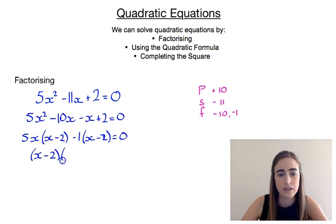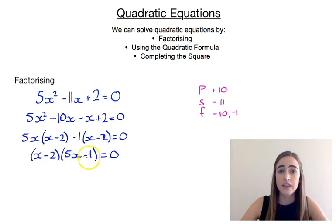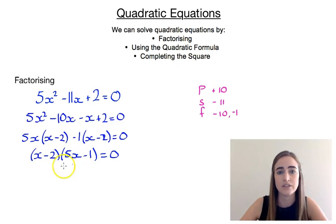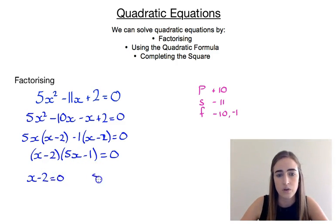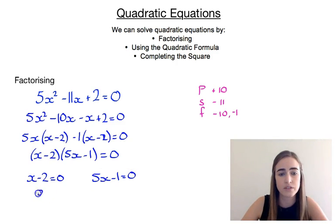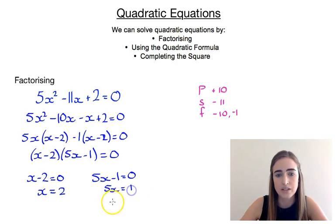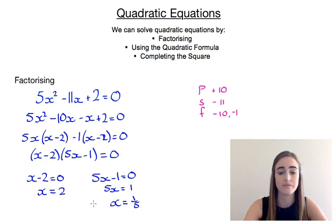And then we've got that common factor of x minus 2 that we can pull out, so x minus 2 times 5x minus 1 is equal to 0. Now that we've factorised, we've got two things multiplied together to give 0. The only way that can happen is if one or both of them are equal to 0. So we either have x minus 2 equals 0, giving x equals 2, or 5x minus 1 equals 0, giving x equals one fifth. So we've got two answers: x equals 2 and x equals one fifth.